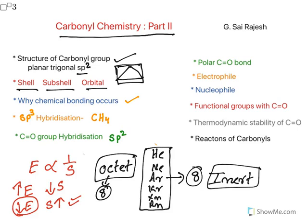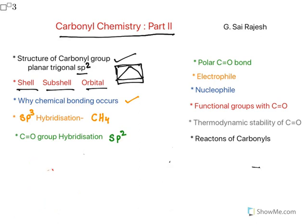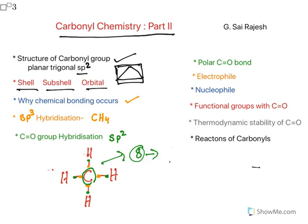This octet rule gives stability to all atoms and molecules. Atoms participate in chemical bonding to attain 8 valency shell electrons. For example, carbon is tetravalent — it has 4 electrons in its valency shell. In a methane molecule, these 4 carbon electrons participate in covalent bonding with hydrogen. Each bond is formed by sharing 2 electrons, one from carbon and one from hydrogen, giving carbon 8 electrons total and satisfying the octet rule.